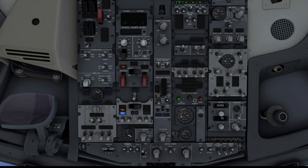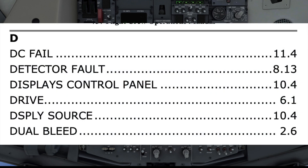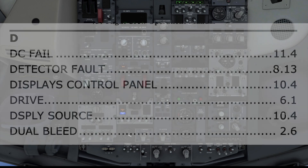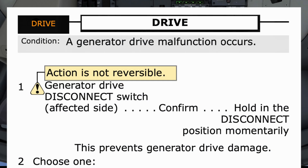Next, the quick reference handbook, referred to as the QRH, is used. The checklist is listed under D in both the lights and alphabetical indexes, and they direct us to page 6.1. The illuminated light for this procedure is shown on the top left of the checklist and helps confirm if this is the correct checklist. The pilot monitoring reads the checklist title and condition, seeking input from the pilot flying if this is the correct checklist, before performing it.